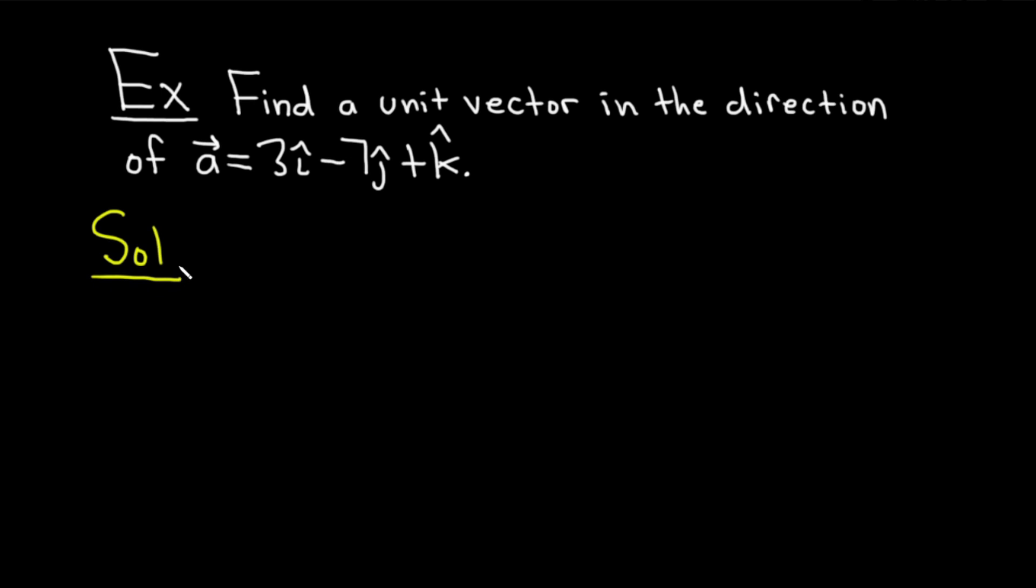Solution. First thing we're going to do in this problem is write this vector in component form because it makes it much easier to deal with. So the vector a is equal to... So in component form, you basically look at the number in front of the i-hat. So there's a 3 here, so we put a 3 as the first component. There's a negative 7 in front of the j-hat, so you put a negative 7. And then there's a 1. There's an invisible 1 in front of the k-hat, so you put a 1.